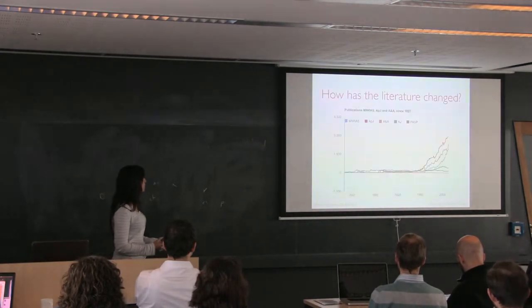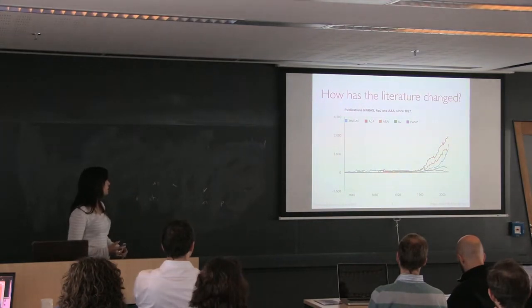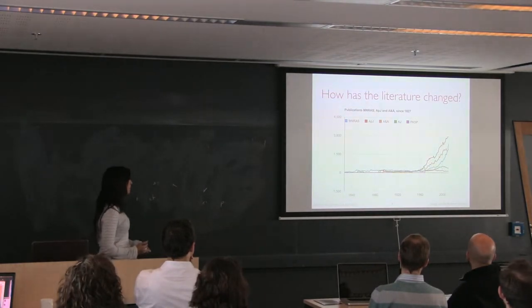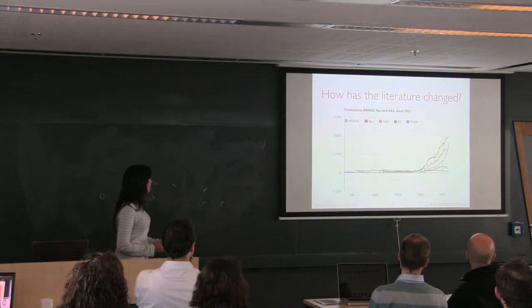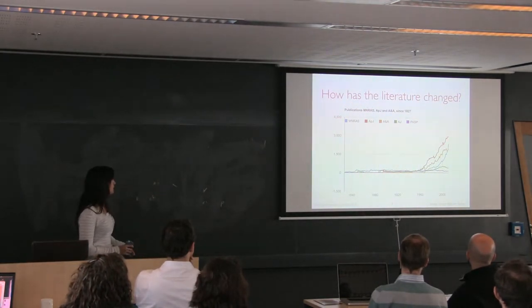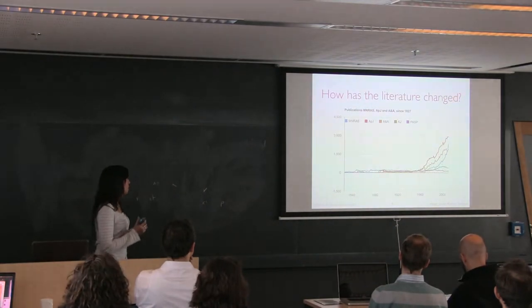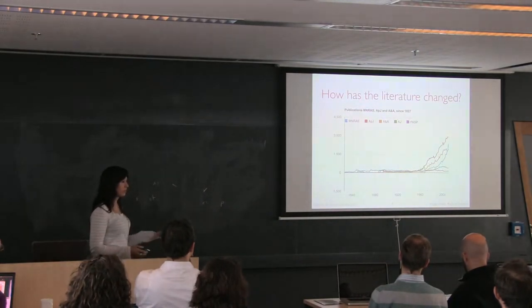How has the literature changed? This plot from Rob Simpson shows how much the literature publications have changed since 1960. It's pretty scary, especially the MNRAS trend, the blue one, which is just going up. Basically, as well as having more astronomers, people are also publishing more.